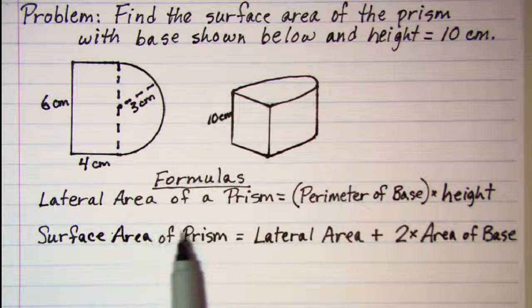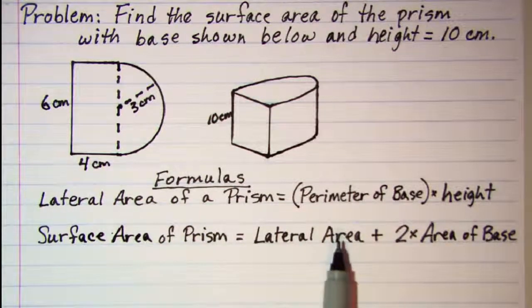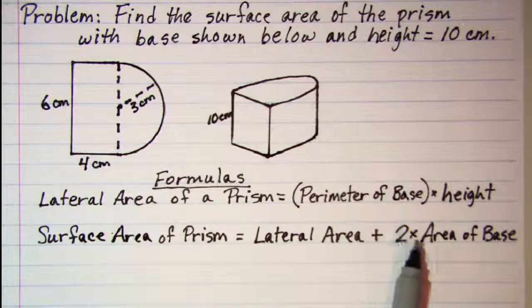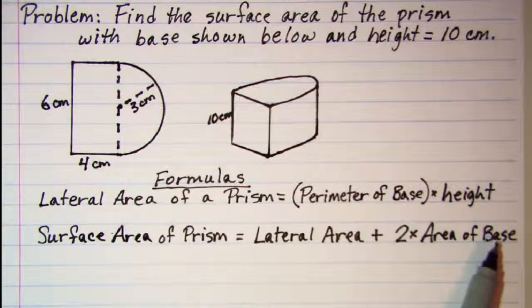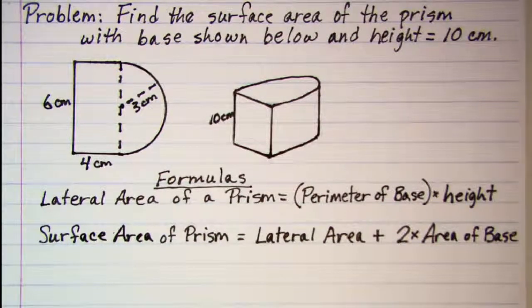The surface area of a prism is equal to the lateral area of the prism plus 2 times the area of the base. Press pause to copy down the problem and the formulas that we will be using. When you are ready to continue, press play.